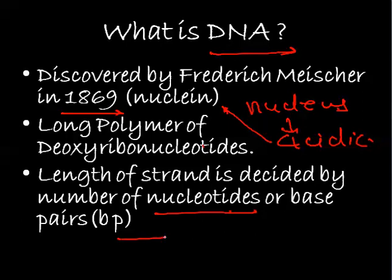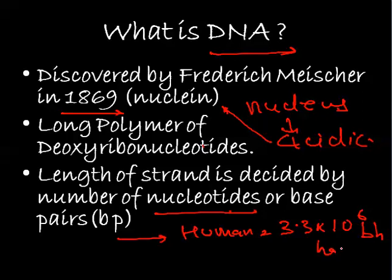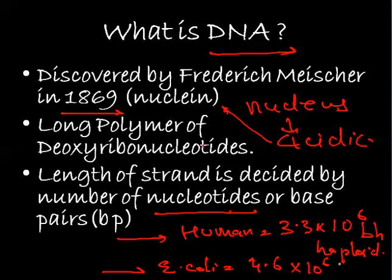That strand is called a strand of nucleotides, which forms a DNA — or it's called a base pair. This base pair varies from organism to organism. In human beings, the haploid number is 3.3 × 10⁶ base pairs. In E. coli, we have 4.6 × 10⁶ base pairs. So this varies according to different organisms.